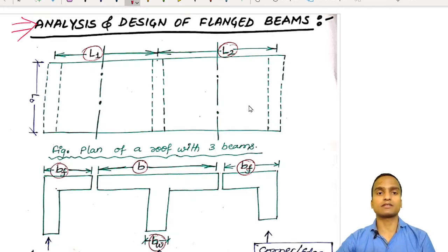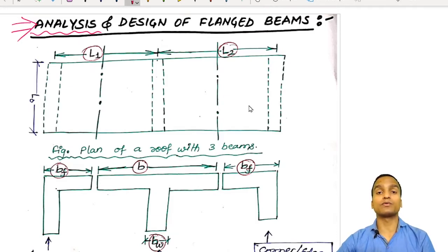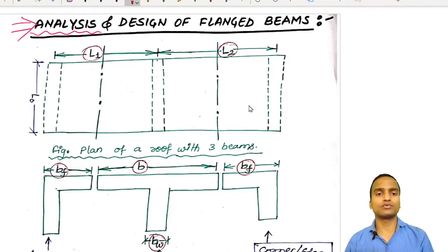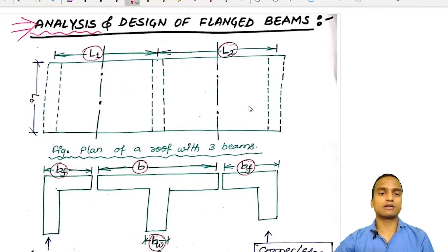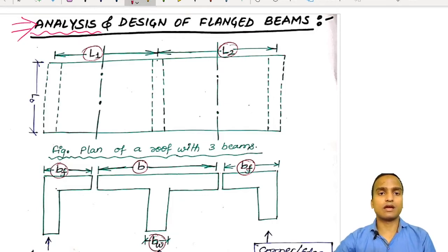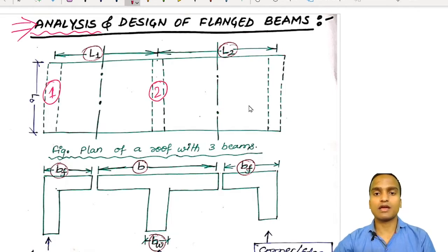Design is of course complex, so we will be limiting ourselves to analysis only. This is the figure of a plan of a roof with three beams. This is the top view of a roof or terrace or slab, where the bold lines represent the continuous boundaries, and the dotted lines represent the hidden boundaries of the beams.